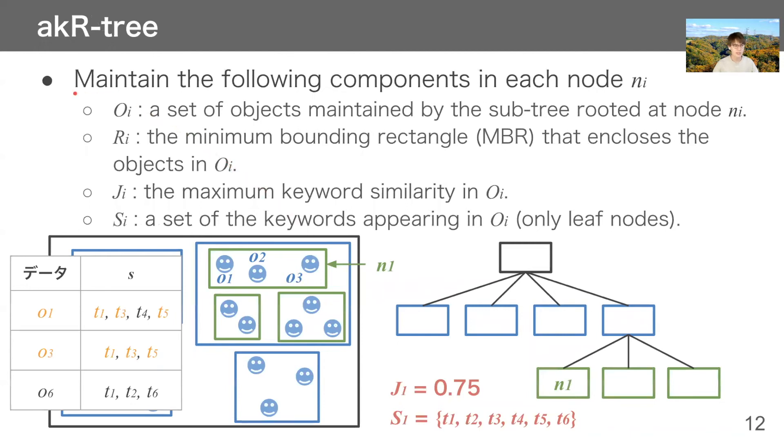Here is the data structure for Feat-SKSJ, AKR-TREE. AKR-TREE is an extension of R-TREE, and it maintains following components in each tree node NI. OI is a set of objects maintained by the subtree rooted at node NI. Ri is a minimum bounding rectangle, MBR, that encloses the objects in OI. Ji is the maximum keyword similarity in OI. Finally, Si is a set of keywords appearing in OI, which is held by only leaf nodes.